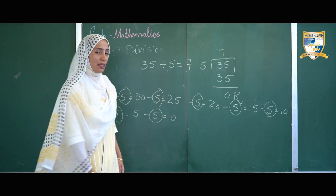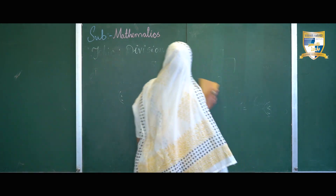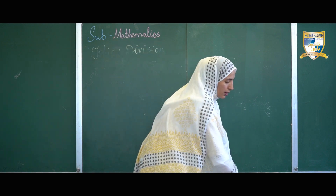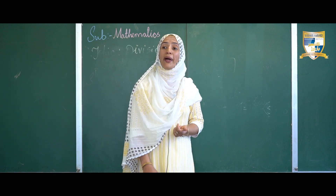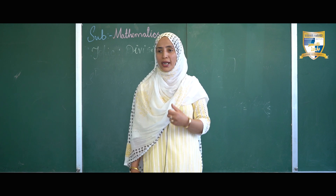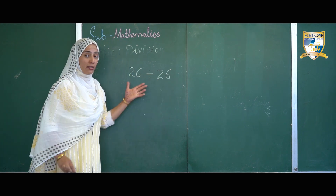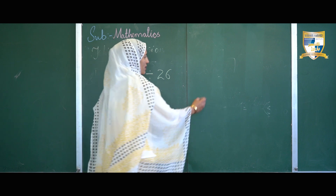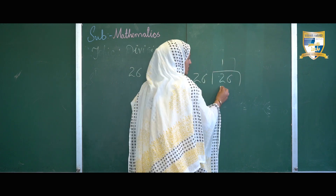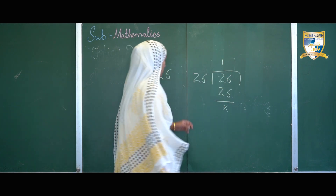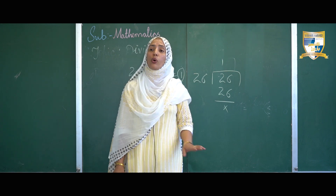Now we'll discuss the division facts. The first division fact: when a number is divided by itself, the quotient is always equal to 1. For example, 26 divided by 26 — the dividend and divisor are the same. 26 goes evenly 1 time into 26 — 26 ones are 26. So 26 ÷ 26 = 1. Whenever a number is divided by itself, the quotient is always equal to 1.